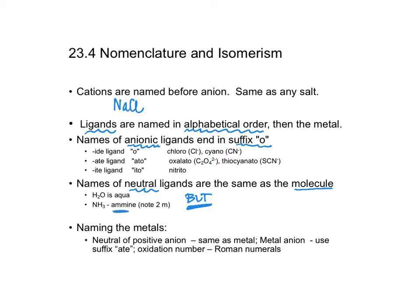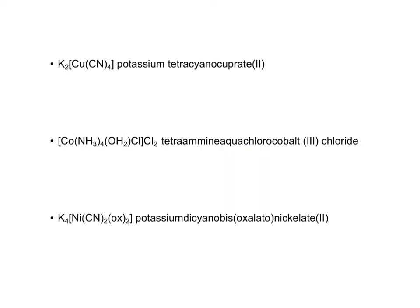Naming the metals: if it's neutral or if it's a positive cation, it will be the same as the metal. If instead I have an anion, I will put an ATE on the end of that metal name and I will use the oxidation number as a Roman numeral.